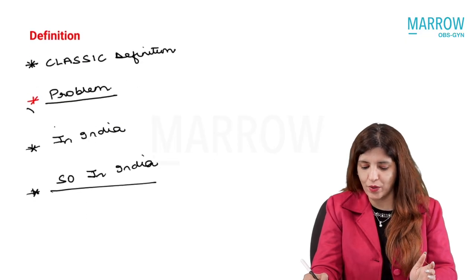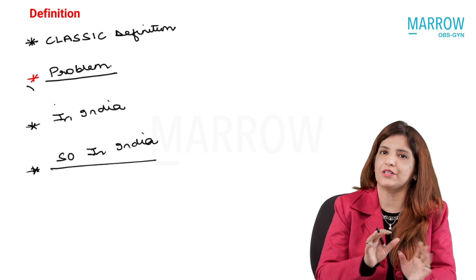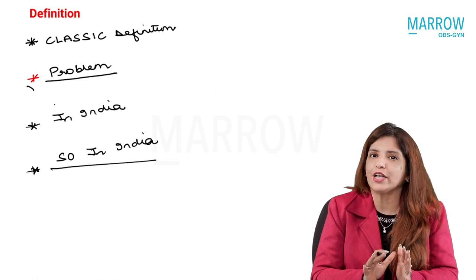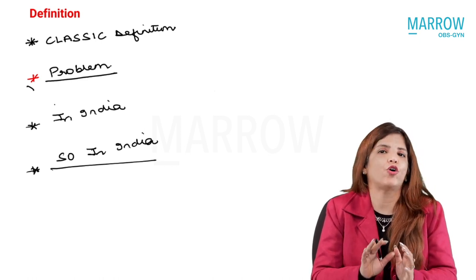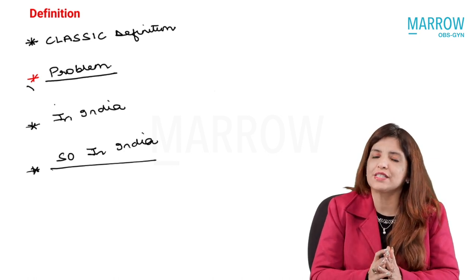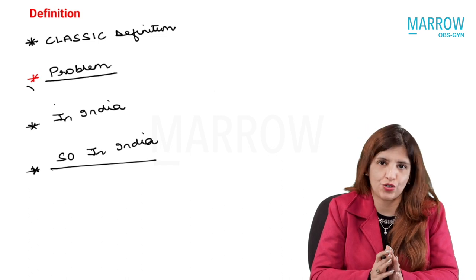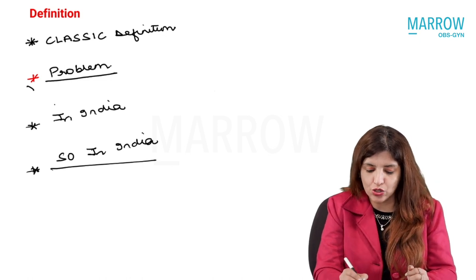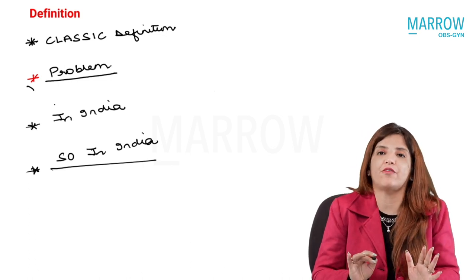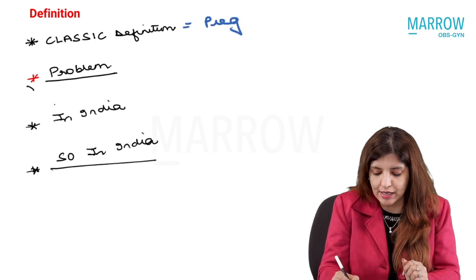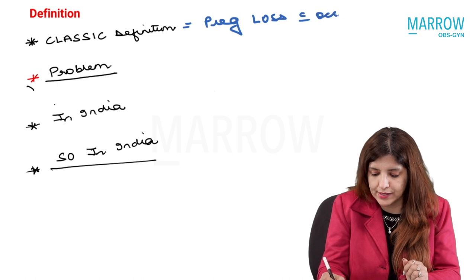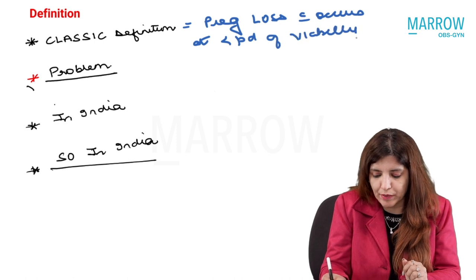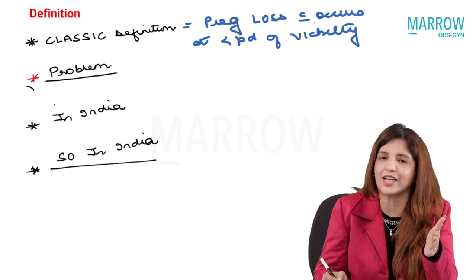I am sure you know your basics very well. You know about abortions from your undergraduate time also because for NEETPG also this was a very important topic, but I am going to tell you everything starting from scratch for abortions, and whatever I am telling you is from Williams 26th edition and also from the latest guidelines. First, the classical definition of abortion: any pregnancy loss which occurs at less than the period of viability. If any pregnancy loss is happening before the period of viability, that is what is called an abortion.